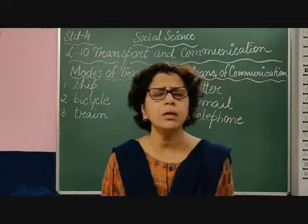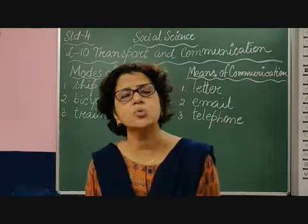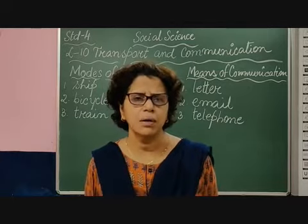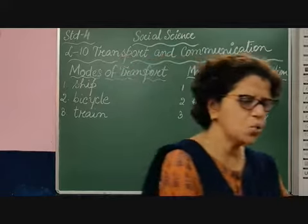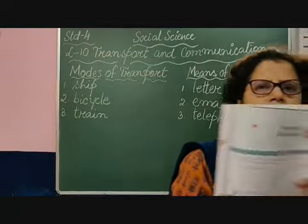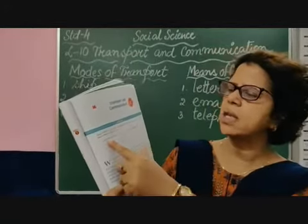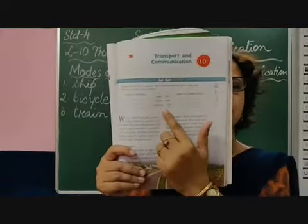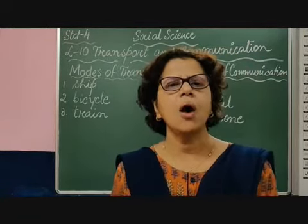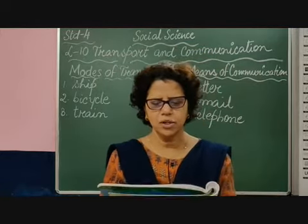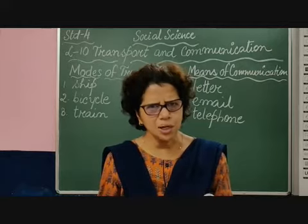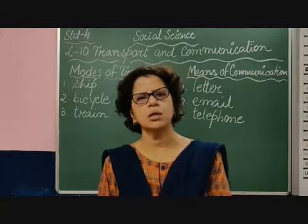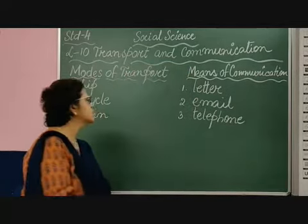These are the things we are going to discuss in this lesson — transport and communication. There is one activity where some words are given and you have to put them in the correct box. Please do it in your Get Set section, children — this is given at the beginning of your chapter. They have given some words in the box which you have to find out — which words belong to transport and which are related to communication. I will read out the words: letter, ship, bicycle, email, telephone, train. These are the six words, and you can work out which are the modes of transport and which are the means of communication.